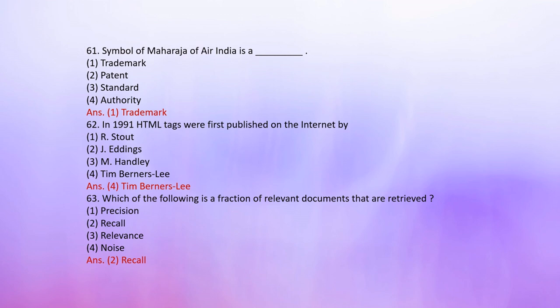Number 61: The symbol of Maharaja of Air India is a — 1. Trademark, 2. Patent, 3. Standard, 4. Authority. The correct answer is 1: Trademark.